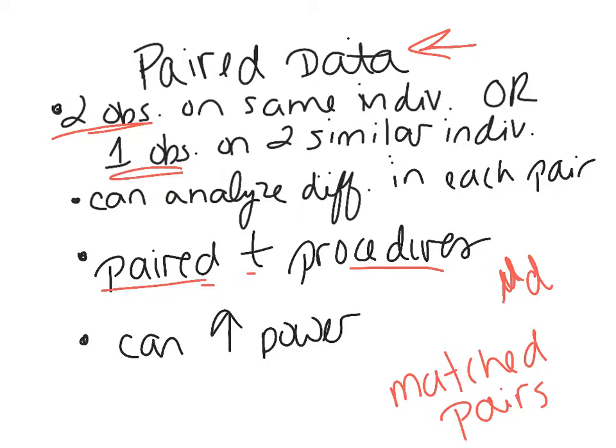It's a matched pairs experiment in an experiment context. This paired data has the ability to increase the power of a test because it accounts for source variability — since you're using the same individual, you decrease that source variability. By decreasing the source variability, you can increase the power of the test.